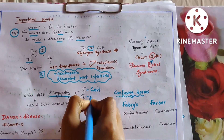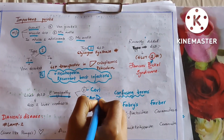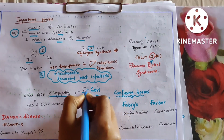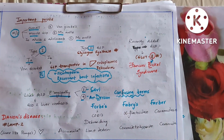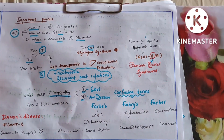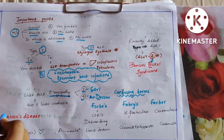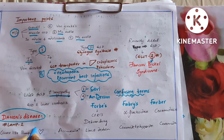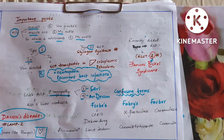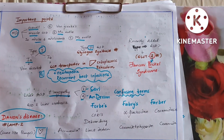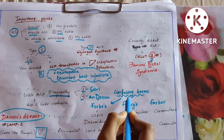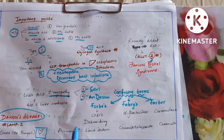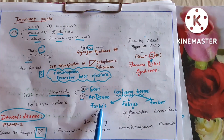Liver GSD with myopathy and liver GSD with liver cirrhosis are both types 3 and 4. There is another disease called Danon's disease, due to deficiency of LAMP-2; it is similar to Pompe's disease — cardiomegaly is seen. The confusing terms are all F's: Forbes, Fabry's, and Farber's. Forbes is Cori's — D branching enzyme, accumulation of limit dextrin.